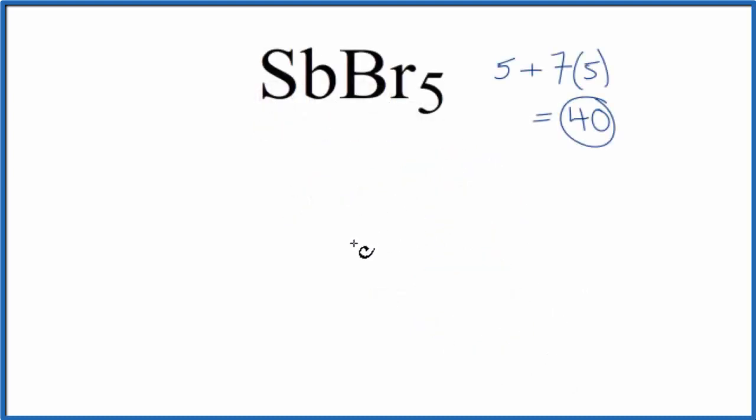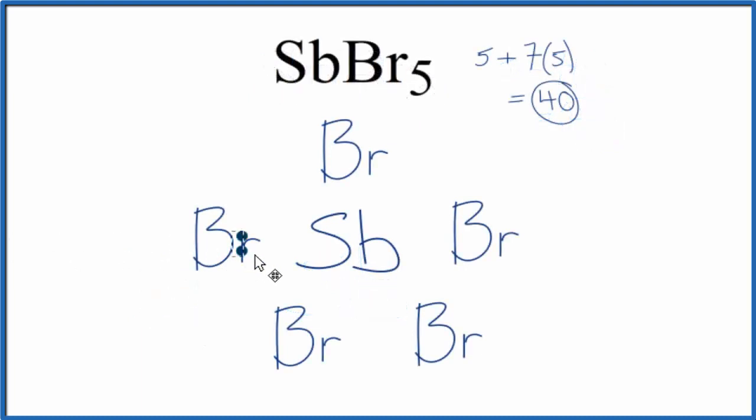We'll put the least electronegative element in the center of our Lewis structure, that's SB, and then we'll put those 5 bromine atoms around it. Once we've done that, we'll put a pair of electrons between atoms, and that's going to form the chemical bond. We've used 10 valence electrons.